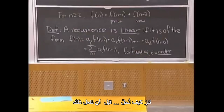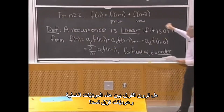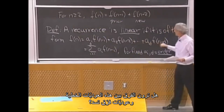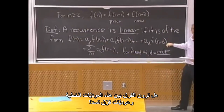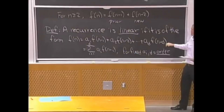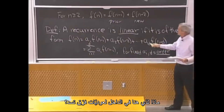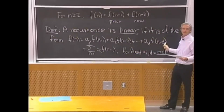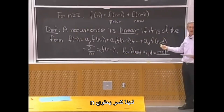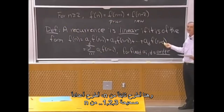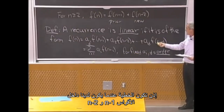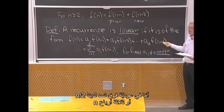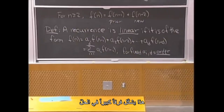Notice the difference between linear and divide-and-conquer recurrences: in divide-and-conquer you get a fraction of n inside (like n/2 or 3n/4), whereas in linear recurrences you subtract a constant integer from n (like n−1, n−2). This makes a huge difference in the solution.